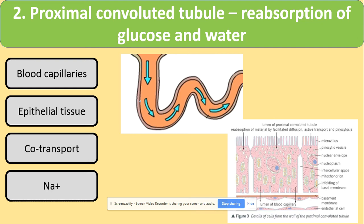After the renal capsule, in the proximal convoluted tubule, reabsorption of glucose and water takes place. The adaptations include many blood capillaries, and the PCT is made of epithelial cells. The reabsorption of glucose uses co-transport. First, sodium ions are actively transported from the epithelial cell of the PCT to the blood capillaries, maintaining a concentration gradient inside the PCT. Then, sodium ions diffuse from the lumen of the PCT into the epithelial cell, bringing glucose along via co-transport.